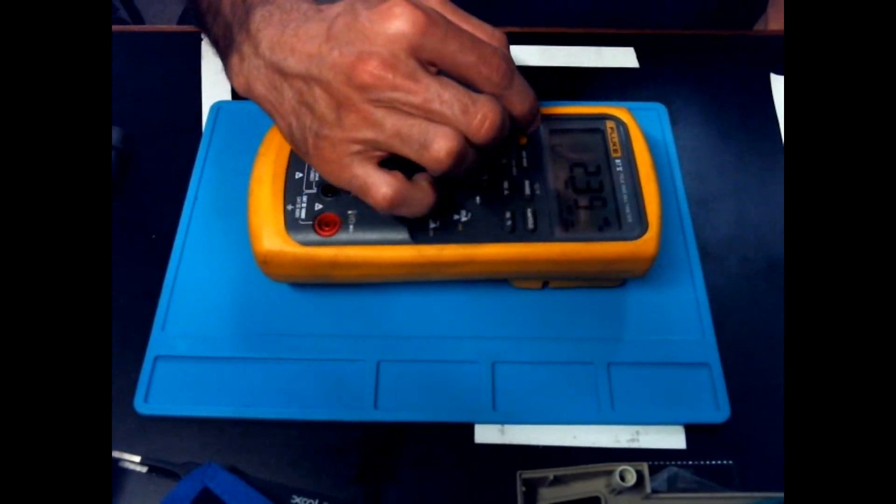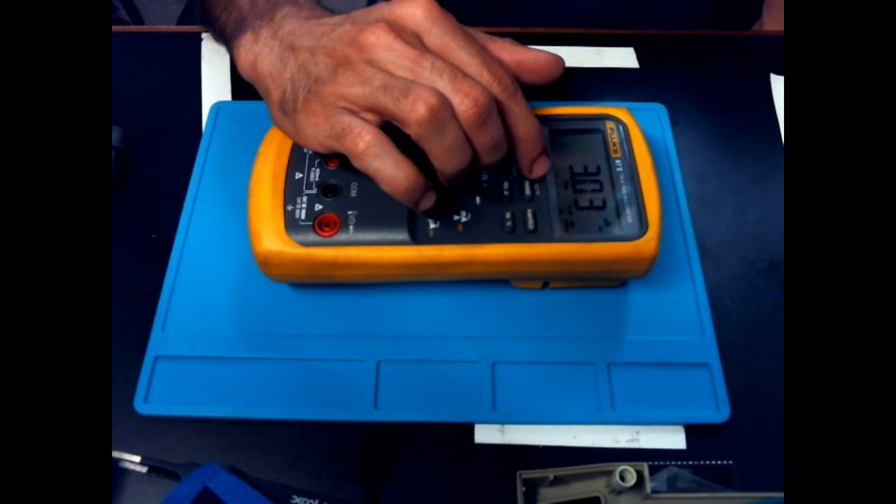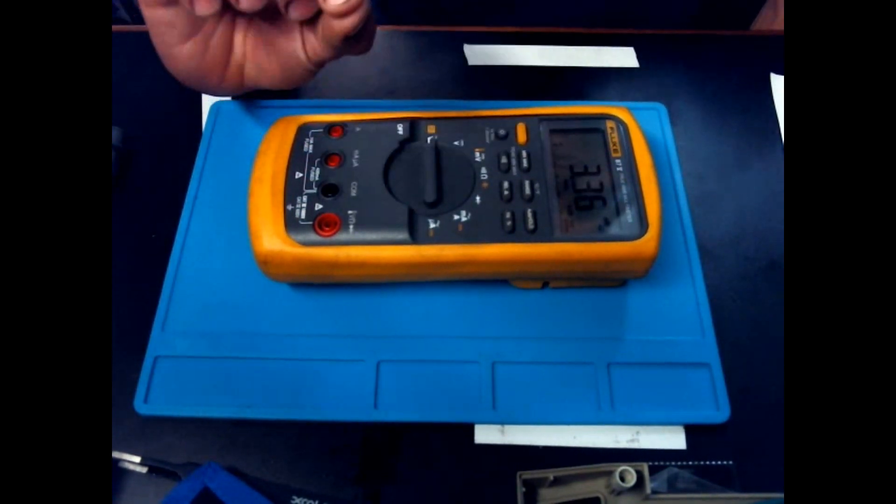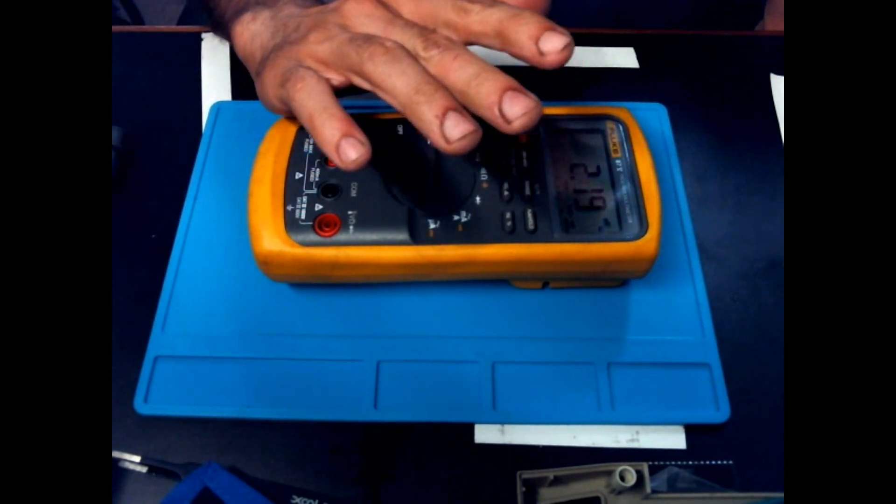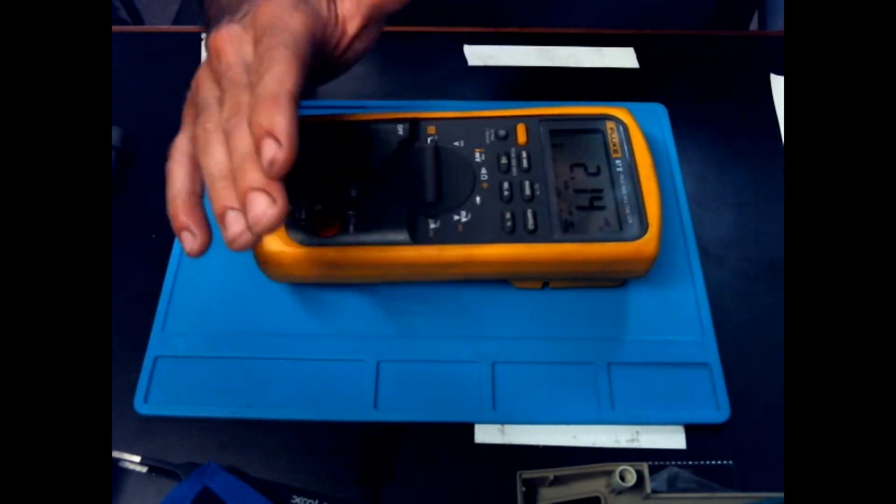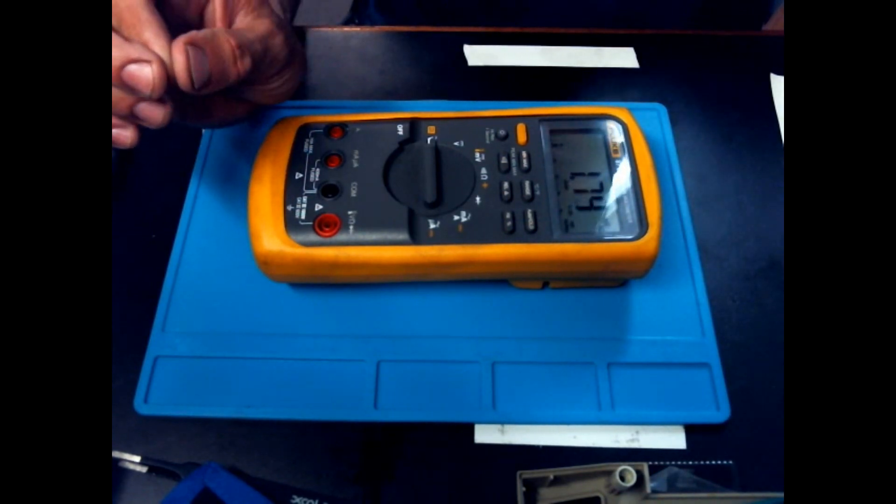It also has the fast acting bar graph, which is 40 times a second update speed, which is really good for spotting those quick little changes in your readings. I don't find that I use that very often. If I'm looking for something like that, I'm probably going to go ahead and pull out a scope.